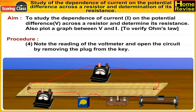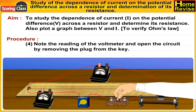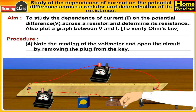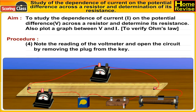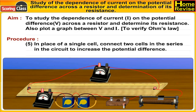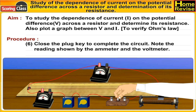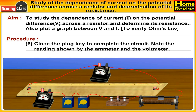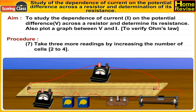Note the reading of the voltmeter and open the circuit by removing the plug from the key. In place of a single cell, connect two cells in series in the circuit to increase the potential difference. Close the plug key to complete the circuit and note the readings shown by the ammeter and the voltmeter.